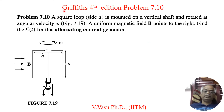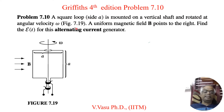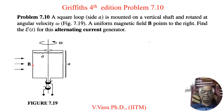Today we will solve problem 7.10 of Griffiths 4th edition Introduction to Electrodynamics. The problem is: a square loop of side A is mounted on a vertical shaft and rotated at an angular velocity omega. A uniform magnetic field B points to the right. We need to find the induced EMF for this alternating current generator.